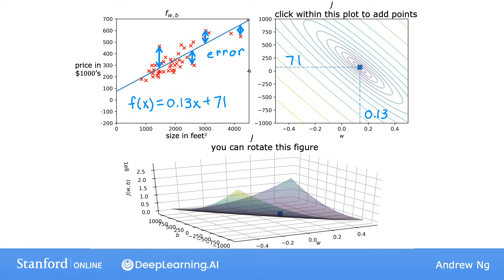I hope that by looking at these figures, you can get a better sense of how different choices of the parameters affect the line f of x and how this corresponds to different values for the cost j. And hopefully, you can see how the better fit lines correspond to points on the graph of j that are closer to the minimum possible cost for this cost function j of W and B.